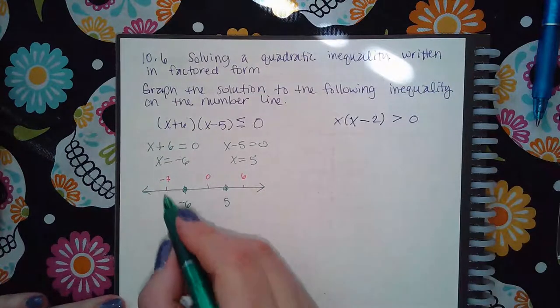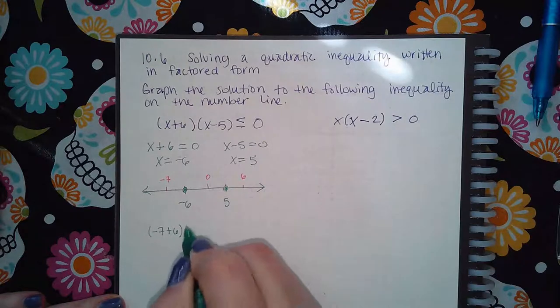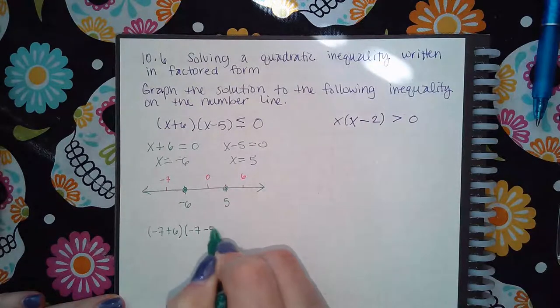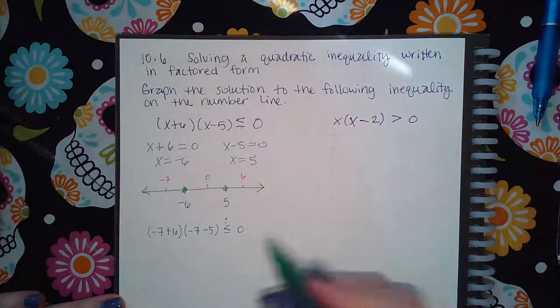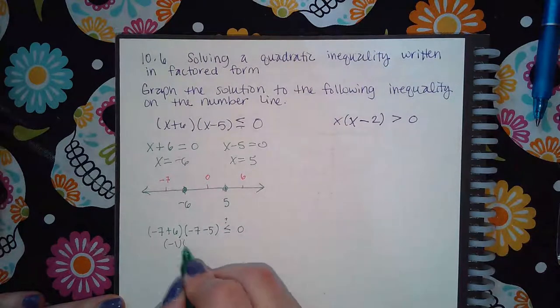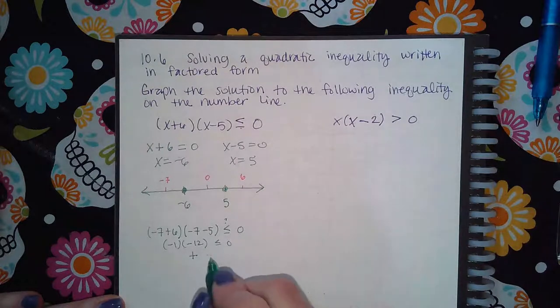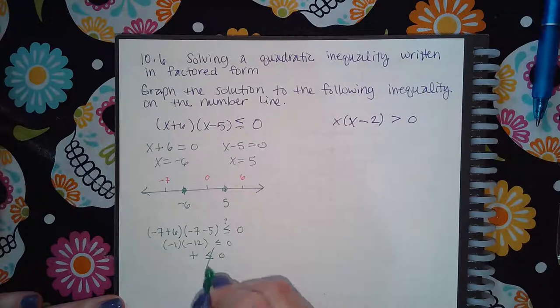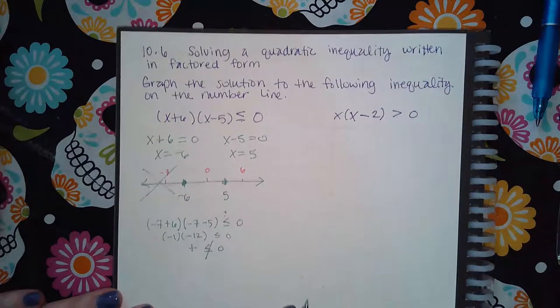And so then if I plug in negative seven into the original inequality, you're trying to figure out is this actually less than zero? So negative one times negative twelve, which is actually a positive. And so positives are not less than zero. So this section does not check out.